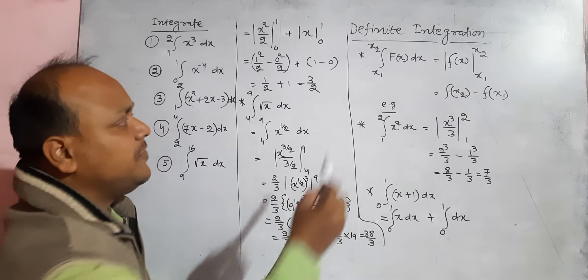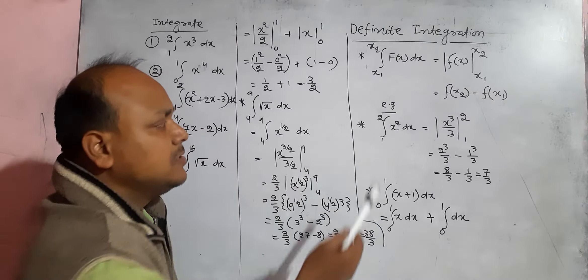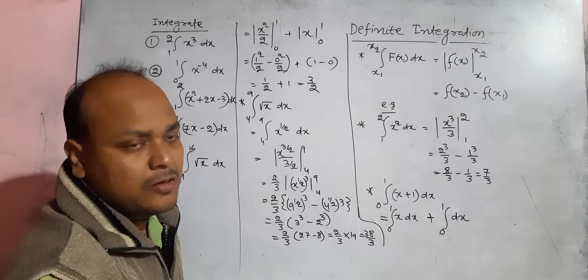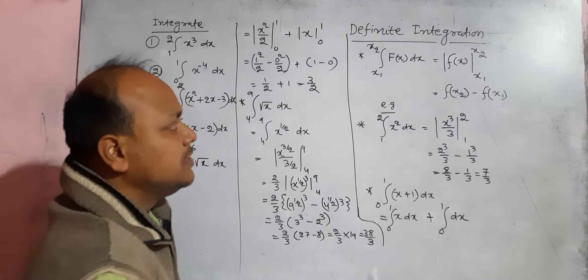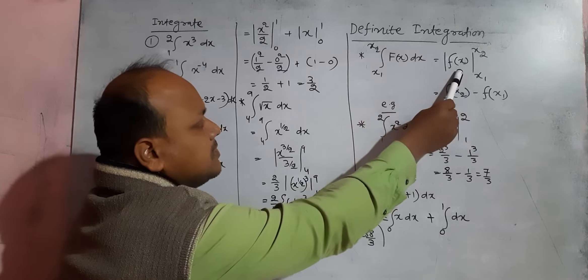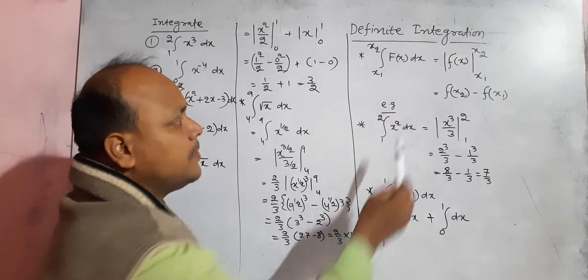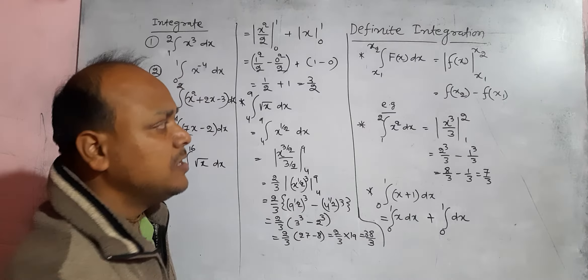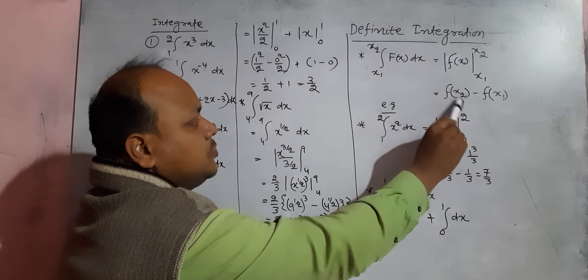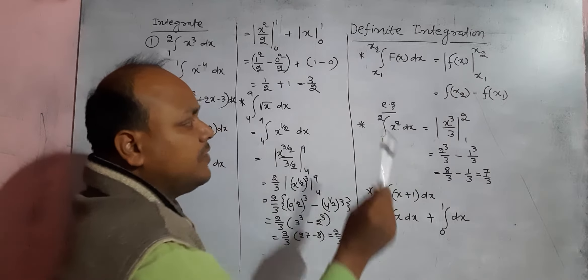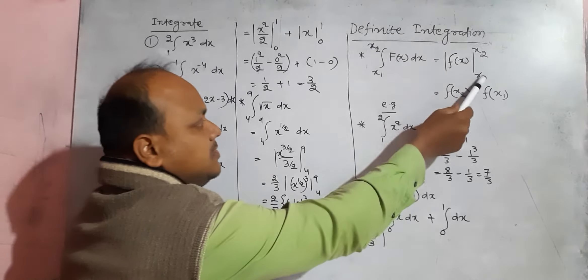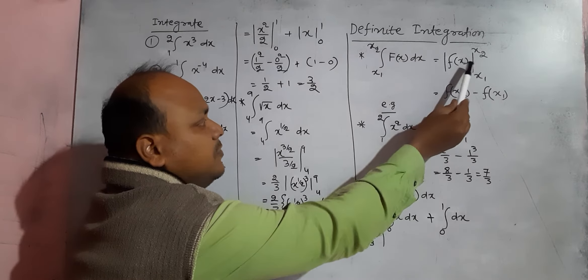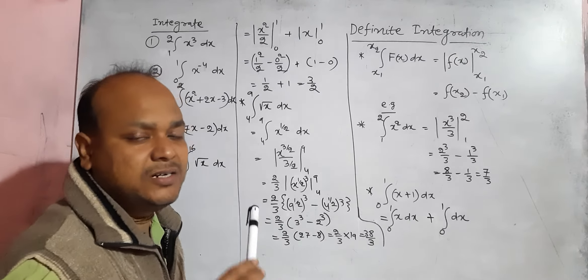In definite integration, let there be a function f(x) whose integration we have to find. There is a lower limit x1 and an upper limit x2. If the integration of f(x) is F(x), we write the integration without the constant of integration and place the limits. Then we replace x with the higher limit x2, subtract the result of replacing x with the lower limit x1, and solve. Since the variable is replaced by the limits, the final answer is a constant, not a variable.